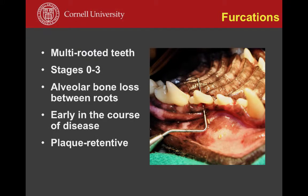In multi-rooted teeth, the furcation area is important to check. You may not see significant recession or deep pocketing and yet already have a through-and-through defect. Checking the furcation area is critical because a tooth can already be ready for extraction even without obvious other signs.